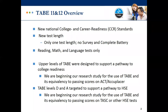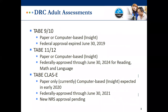TABE 11 and 12 doesn't have spelling, language mechanics, or vocabulary as separate tests — those are now more combined into the main headings of reading, math, and language. We'll talk a little more at the end about some correlation studies we're doing to high school equivalency and to college placement alignments. Where we're at today: TABE 9 and 10 is still available but not for federal reporting — federal approval ended on June 30th — and TABE 11 and 12 is now federally approved until June 30th of 2024.